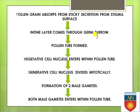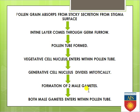Coming out through the germ furrow, it forms the pollen tube. After formation of the pollen tube, the vegetative cell nucleus enters within the pollen tube first. Then the generative cell nucleus divides mitotically — since the generative cell contains a haploid number of chromosomes, it divides mitotically to produce two haploid male gametes.